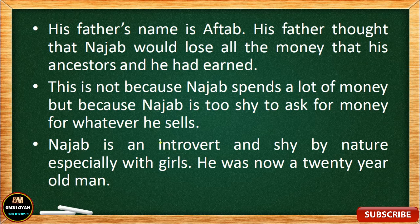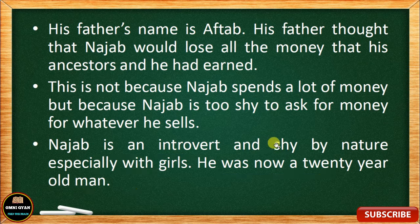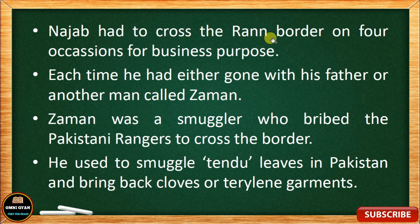The reason Najab is shy is that he is basically an introvert — shy and reserved, especially when girls are in front of him. Though he was now a 20-year-old man, by nature he was very introverted and would always be shy, especially when girls came to him. He never talked to girls. Najab had to cross the Rann border on four occasions for business purposes.